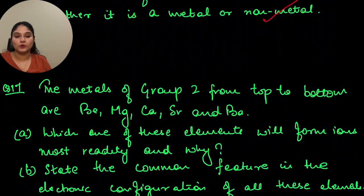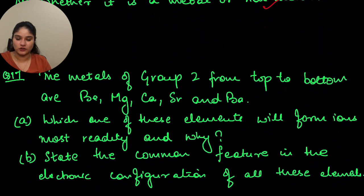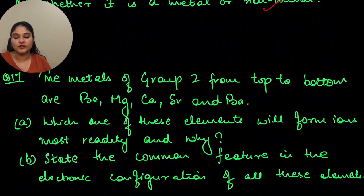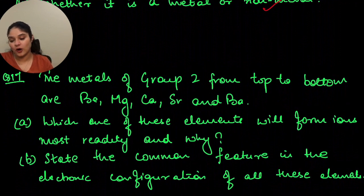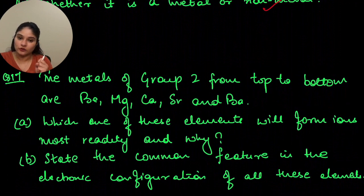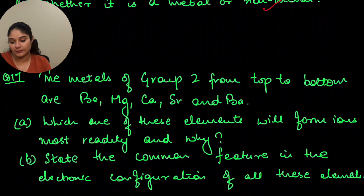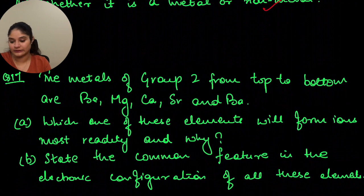The metals of group 2 from top to bottom are beryllium, magnesium, calcium, strontium, and barium. Which one will form ions most readily and why? Barium will form ions most readily because it is present at the bottom having the maximum atomic size — when you have the maximum atomic size, it is easy to donate electrons and convert into ions. The common feature in the electronic configuration of these elements is that they all have 2 valence electrons.